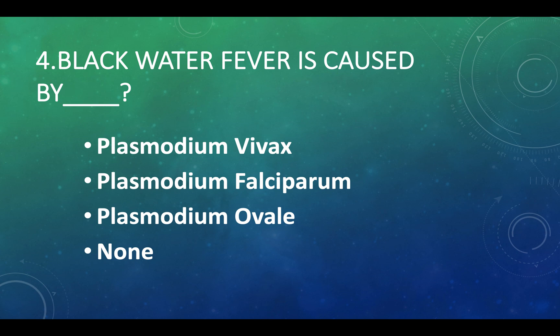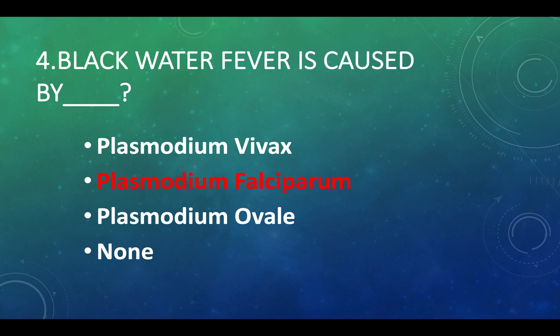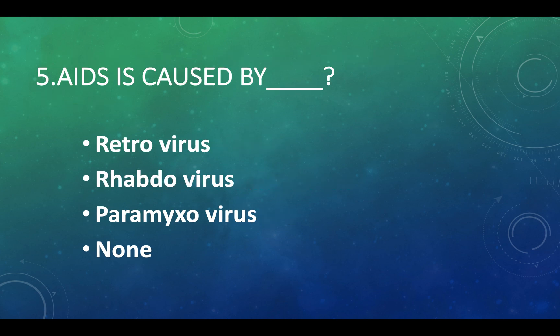Answer: Option A, Plasmodium vivax. The virus causing rabies belongs to: Option A — retrovirus, Option B — rhabdovirus, Option C — paramyxovirus, Option D — none of these. Answer: Option A, retrovirus.